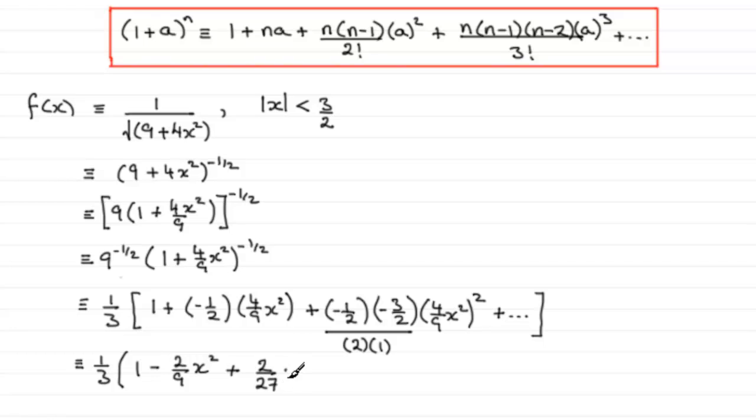And the next term will be a minus term because it's oscillating. Okay, so all we need to do now is just expand this. And we've got that this is identical to 1/3 times 1, which is 1/3, 1/3 times the next term gives me -2x²/27.